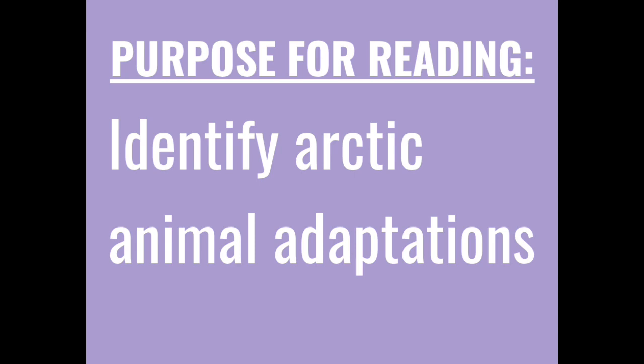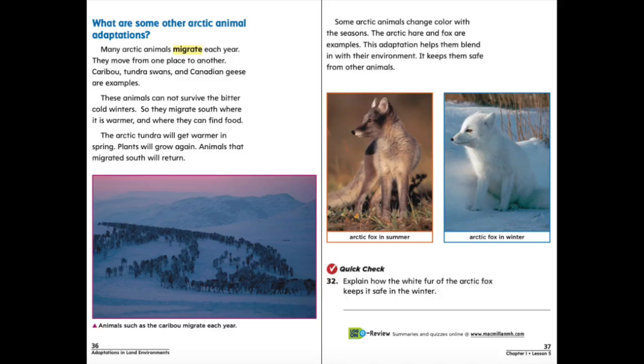Our purpose for reading today is to be able to identify arctic animal adaptations. Many arctic animals migrate each year — they move from one place to another. Caribou, tundra swans, and Canadian geese are examples. These animals cannot survive the bitter cold winters, so they migrate south where it is warmer and where they can find food.